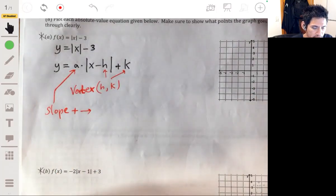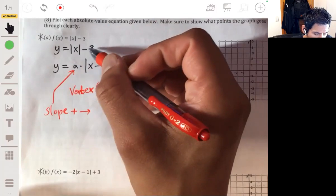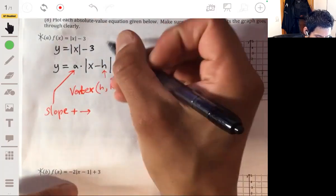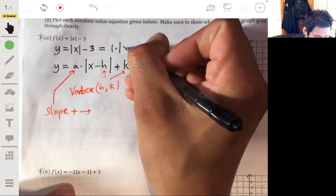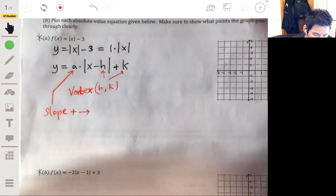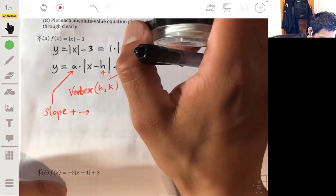So what I mean is, first let's break this down. So this is the same as one times the absolute value of x.